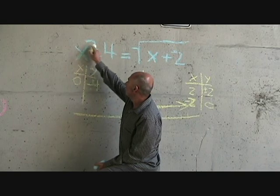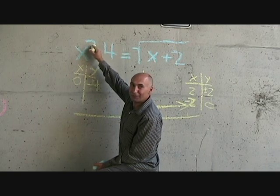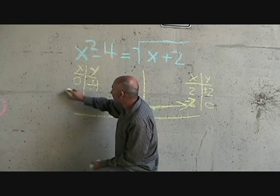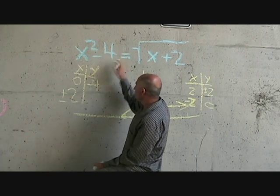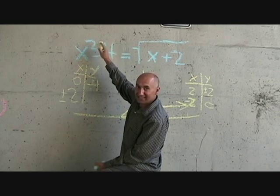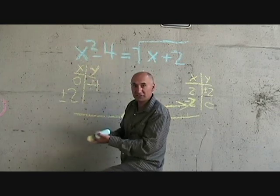When x is 2, 2 squared is going to be 4. 4 minus 4 is 0. So when x is 2 plus or minus 2, y is going to be, or this side, this function, because this is just a function, it's just a y, right?